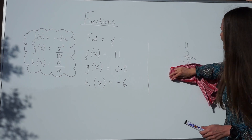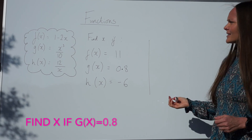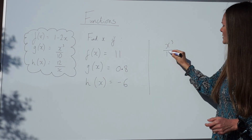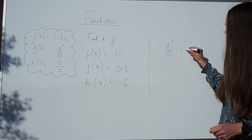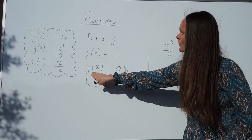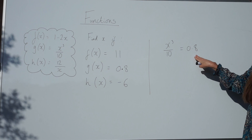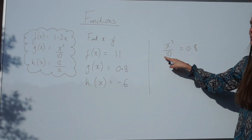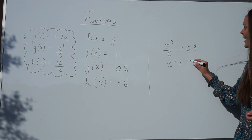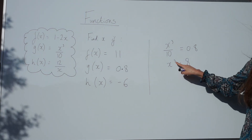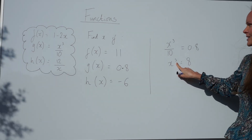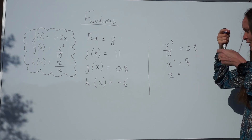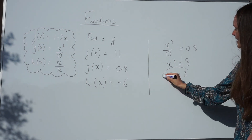Onto g of x. It says g of x is equal to 0.8, and the function g of x is x cubed over 10. So I put x cubed over 10 equal to 0.8. To solve this equation, I want to get rid of the fraction, so I multiply both sides by 10 to get x cubed equals 8. Then to find x, I cube root both sides: cube root of the left side gives x, and cube root of 8 gives 2.